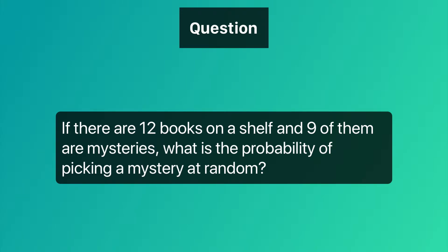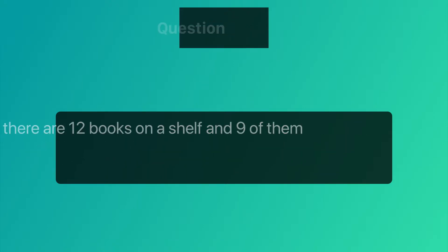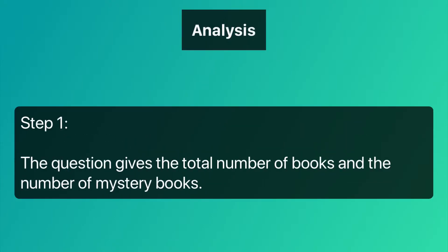When you see a probability question that deals with one event and another event both occurring, you will multiply the probabilities. Let's show an example. There are twelve books on the shelf and nine of them are mysteries. What is the probability of picking a mystery at random? Step one: the question gives the total number of books and the number of mystery books.